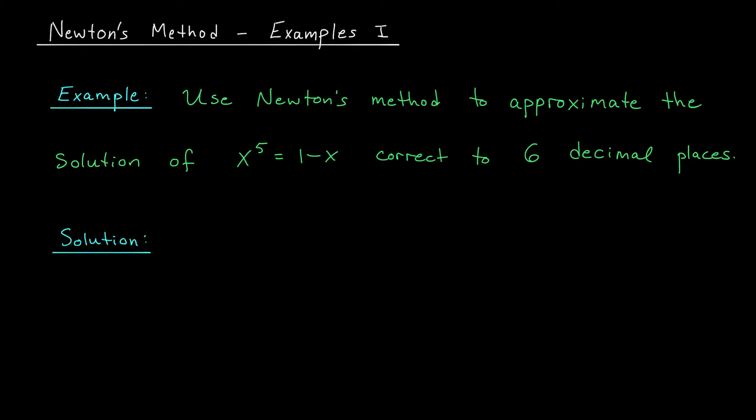Hi everyone, and welcome back. In this example video, I'd like to use Newton's method to solve the problem from our overview video. In particular, I want to approximate the solution to x to the 5 equals 1 minus x, correct to 6 decimal places.